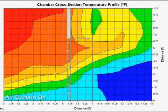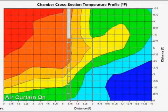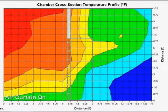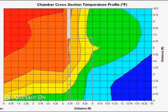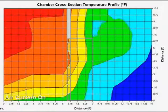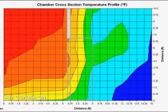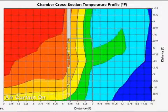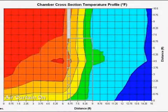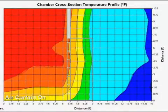When the air curtain is activated, you can very quickly see the temperature gradients move vertically to both sides of the doorway. You can see clearly, since there is very little heat going through the door, that the cold side establishes a very even temperature profile.